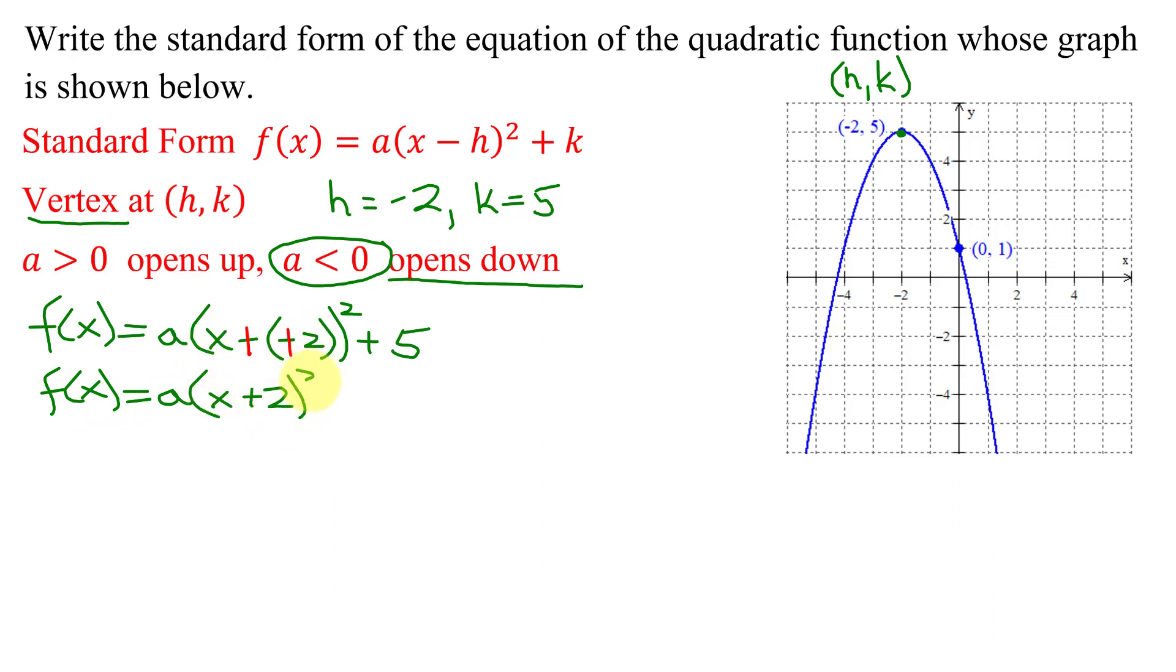The last thing to do is find the value of a, the leading coefficient. I'm going to use this point here, the ordered pair (0, 1). That means when x is 0, y is 1. Or in this case, instead of y, we have f of x.